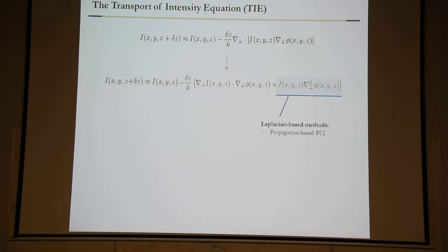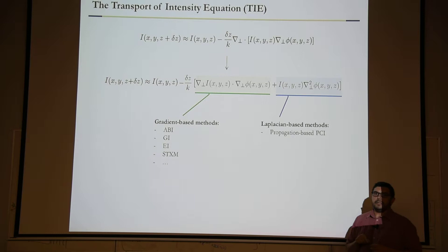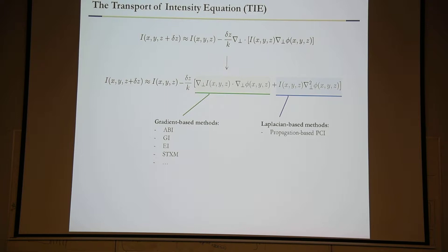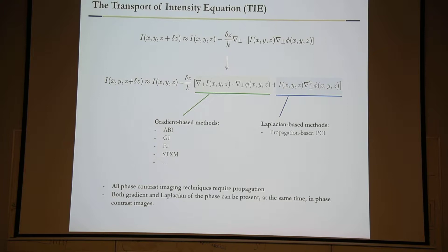If we forget about the first term and just focus on the second, this is the conventional propagation-based phase contrast sensitivity. You've got an image that is proportional to the intensity times a high-frequency phase Laplacian — so edges are enhanced and everything looks like sharp edges. On the other hand, if you focus on the first term, you've got phase gradient, which is what is measured in a whole lot of other techniques such as analyzer-based and grating methods. So by staring at the equation, within the limit of validity of the transport of intensity equation, we can see two things.